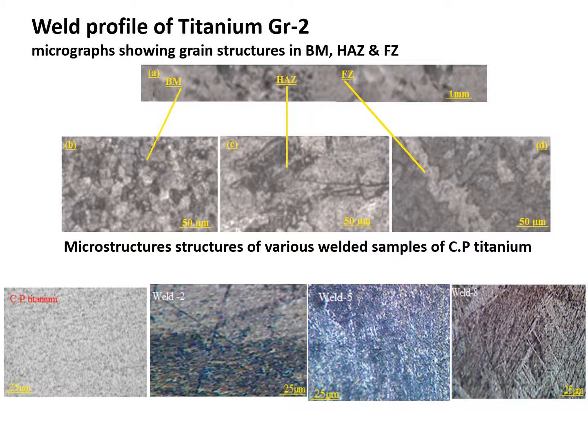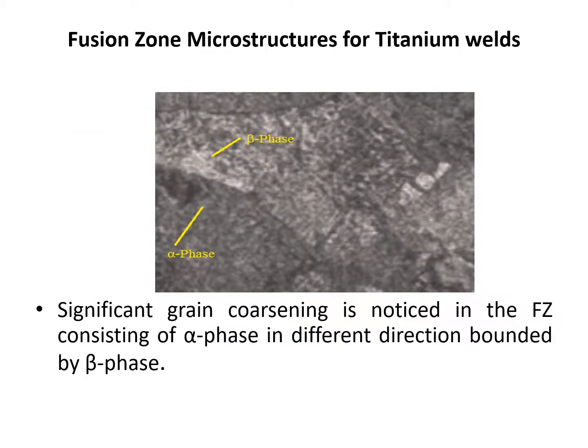This optical micrograph of weld sample 5 shows the grain structure in the base metal, heat affected zones, and fusion zones. In the fusion zones, it has been observed that there is significant grain coarsening consisting of alpha phase in different directions, which has been bounded by beta phase.